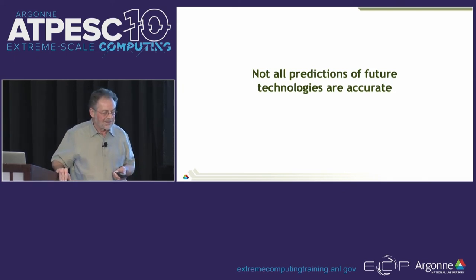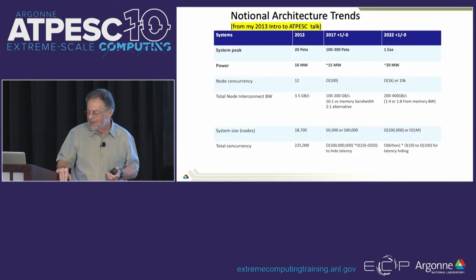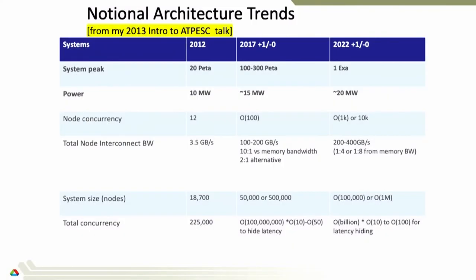Here's a prediction I made in the first ATPESC program in July 2013. One thing I got right: the first exascale system would be in 2022 — and in 2013 there was a lot of argument about that. But I got a lot of things wrong. A key one is the number of nodes — at the time we thought there would be a huge number of pretty small nodes, but in fact we've gotten into really fat nodes and far fewer than a hundred thousand or a million. So I'm no Vannevar Bush.